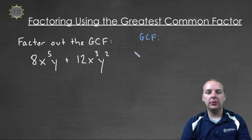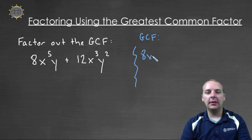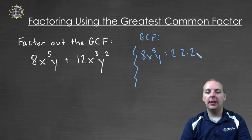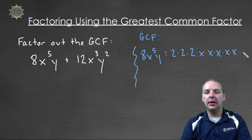What I'll do is write down each of these terms over here on the side. Eight x to the fifth times y — if you factor eight completely apart it would be two times two times two, and then x to the fifth would be one, two, three, four, five factors of x.